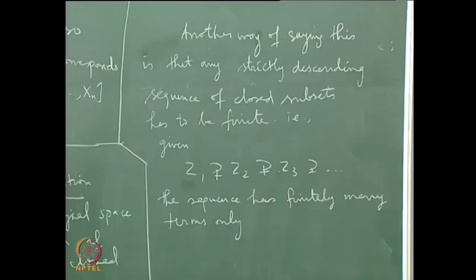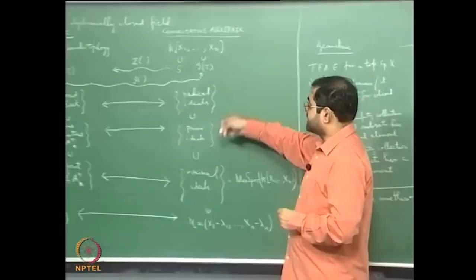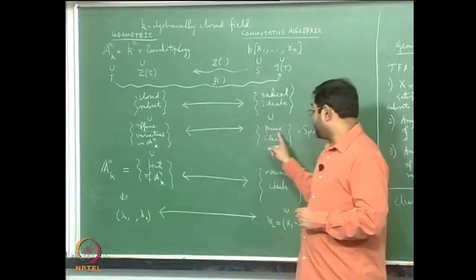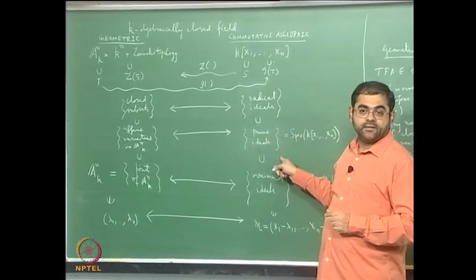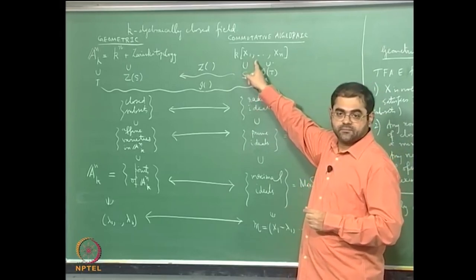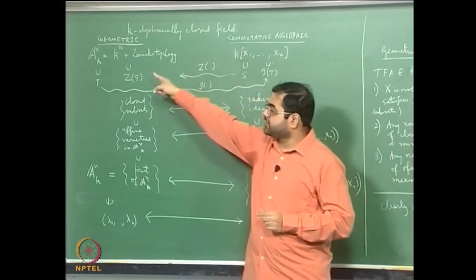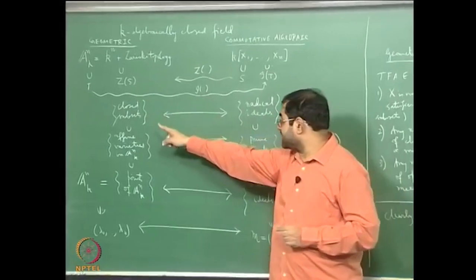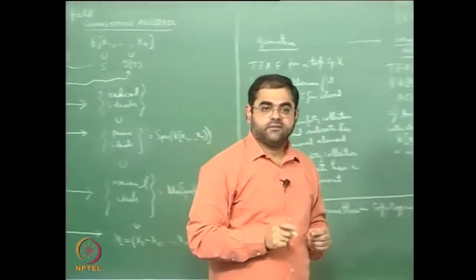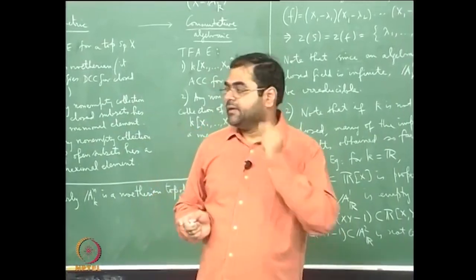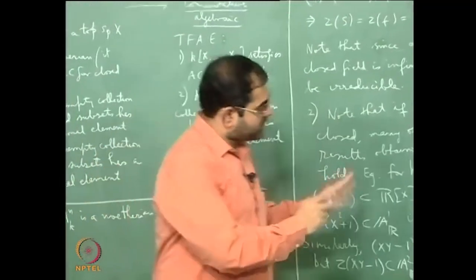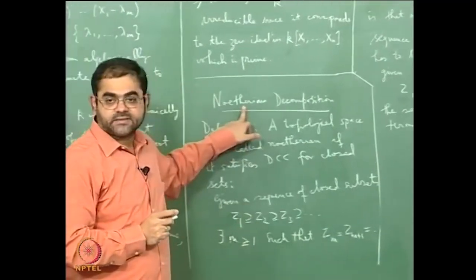The topological dimension of Aⁿ being n will translate on the commutative algebraic side to what is called the Krull dimension of the ring k[x1,...,xn] being n, and that will correspond to the topological dimension of the affine space. To prove the Krull dimension is n, we will need some field theory and commutative algebra, which I will recall.